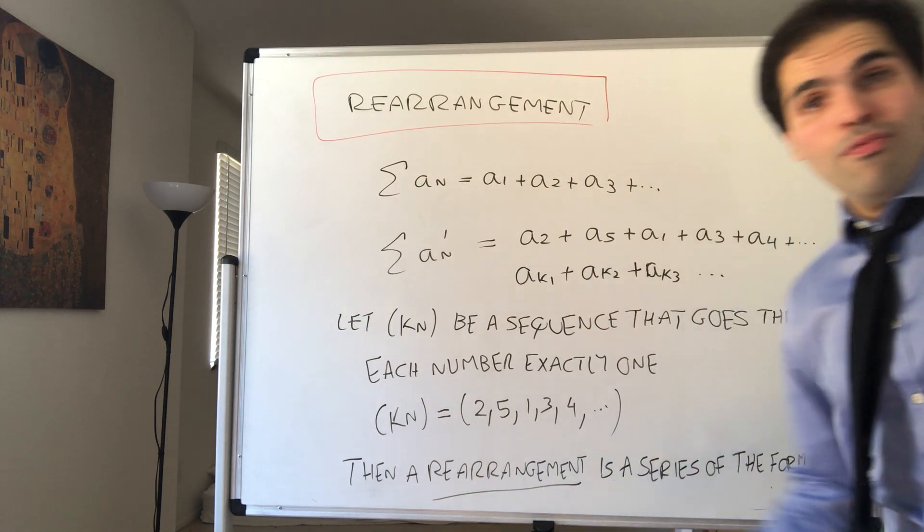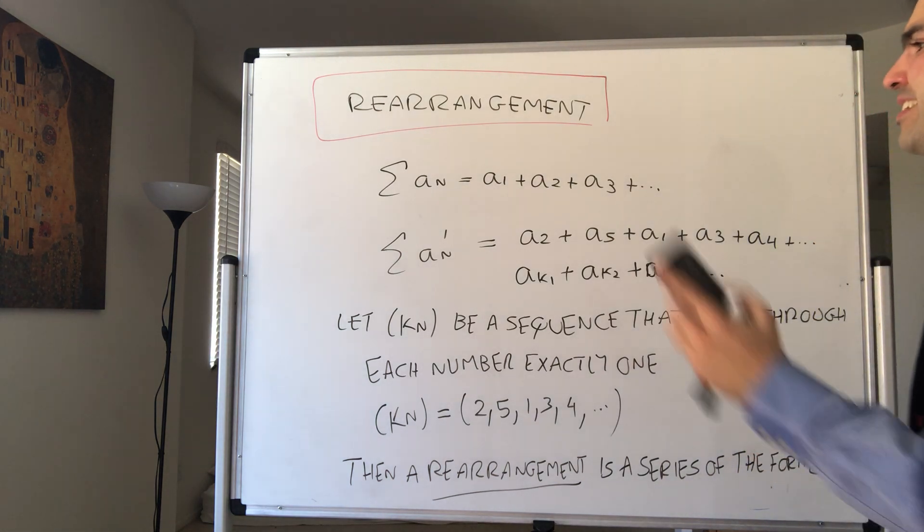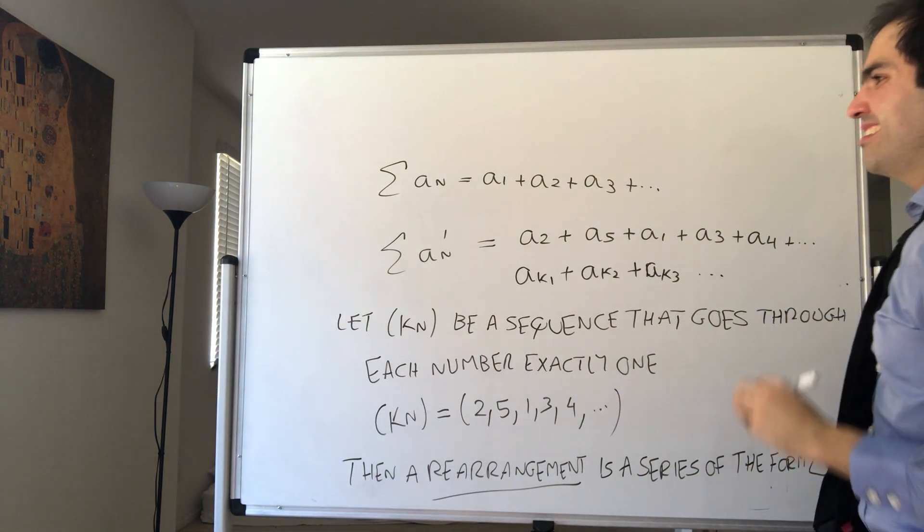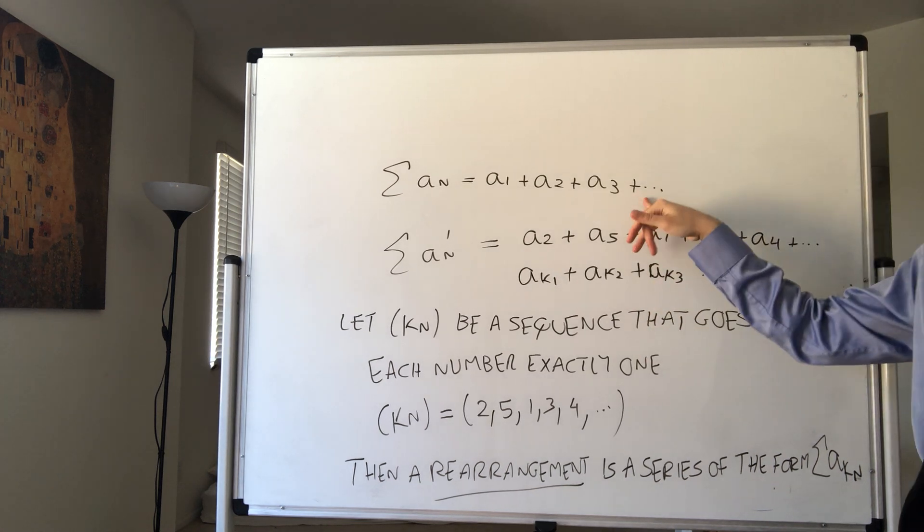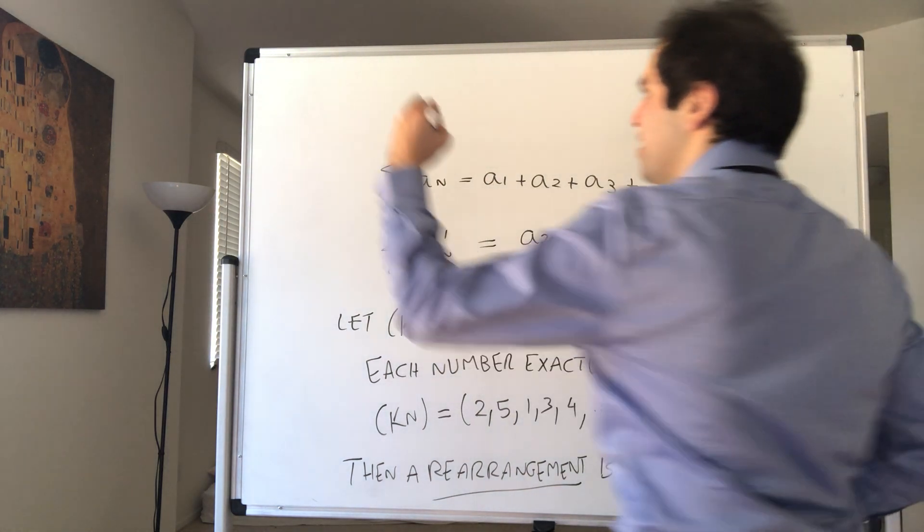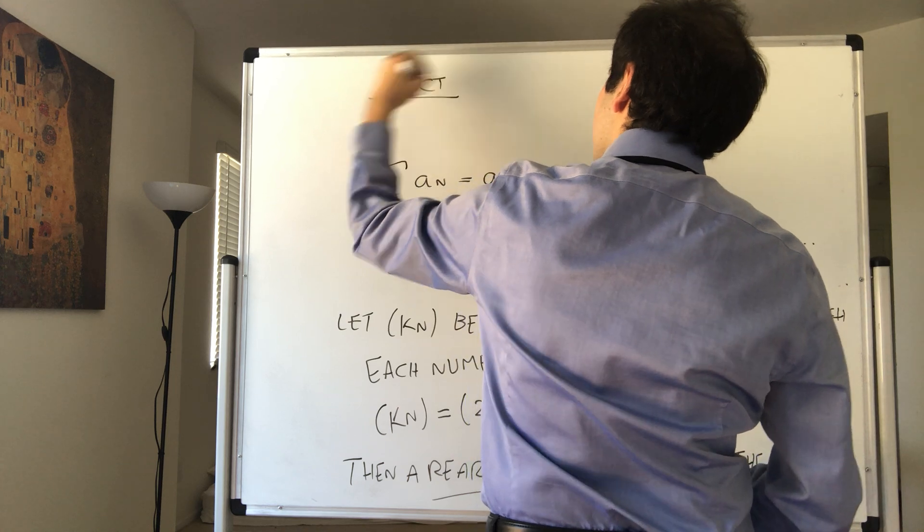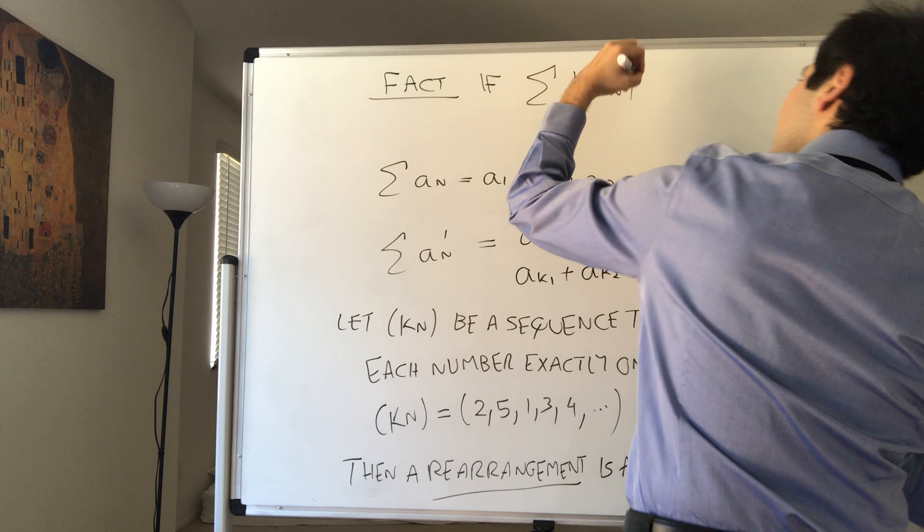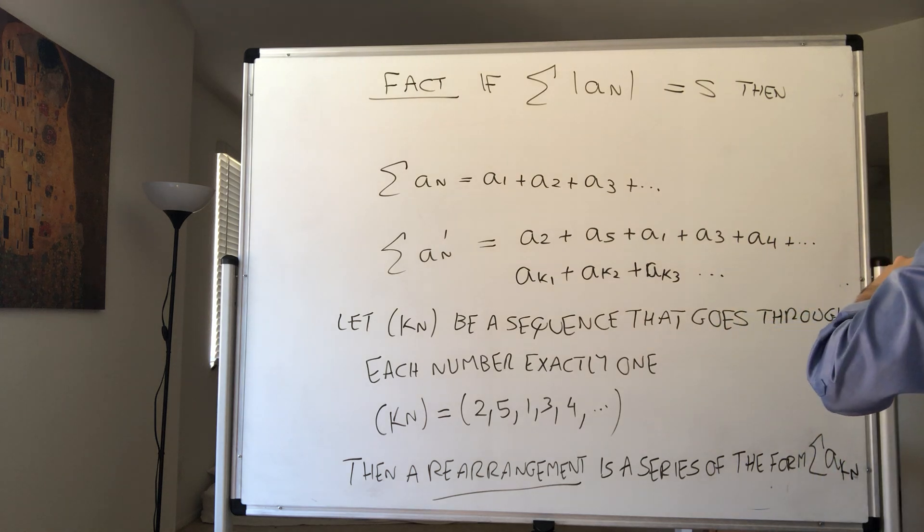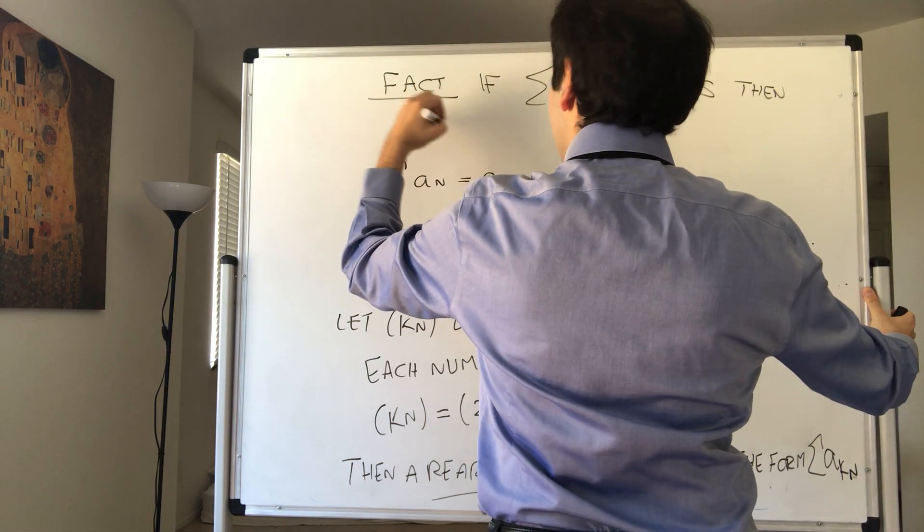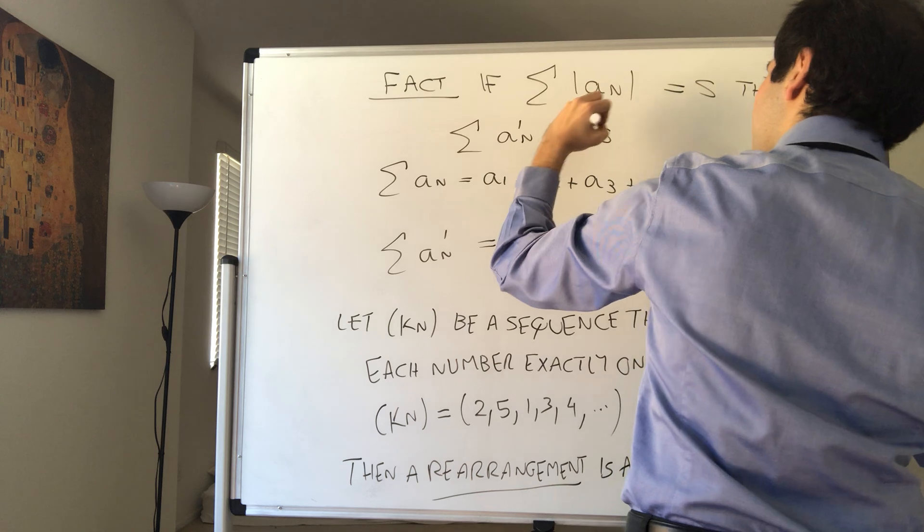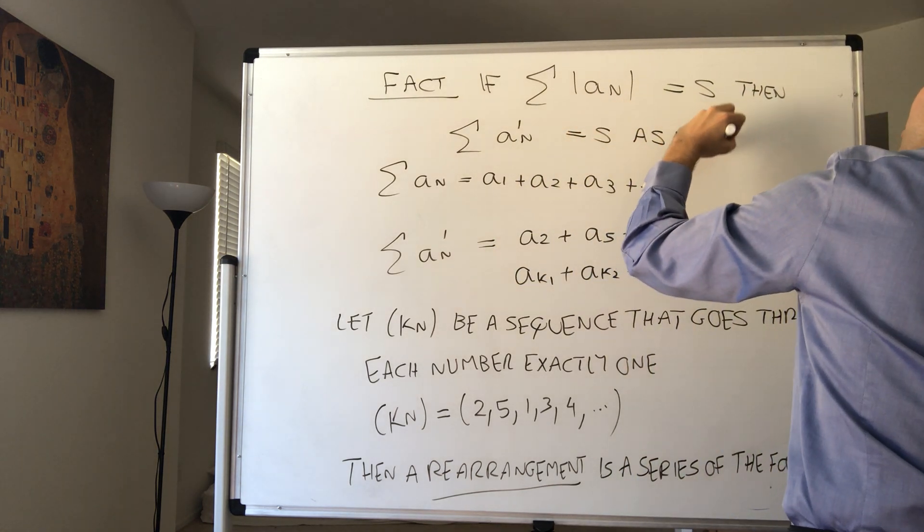There are very exciting facts about rearrangement of series. Today I'll prove one of them, the less exciting fact. I will show that if a series converges absolutely, any rearrangement converges to the same limit. So fact: if sum of A_n equals S, then sum of A'_n goes to S as well for any rearrangement.